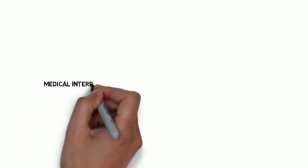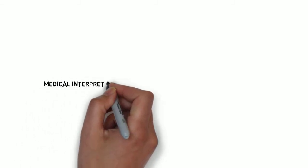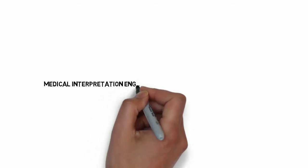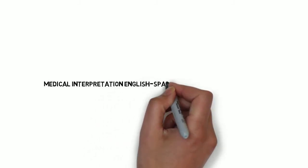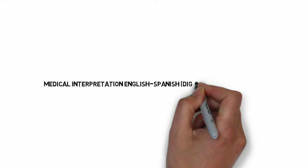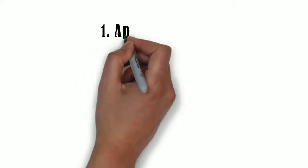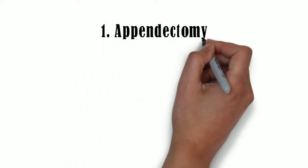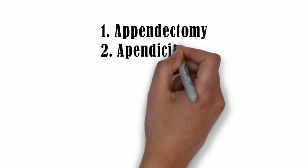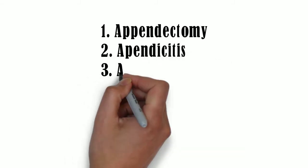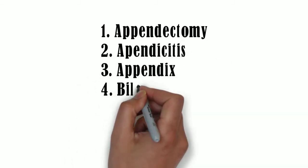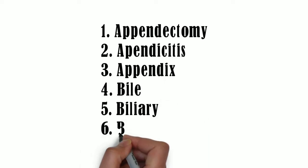Welcome to Medical Interpretation English-Spanish Digestive System Video 2. Today I will discuss six words related to the digestive system. I will provide their definition in English as well as in Spanish. The six words are: appendectomy, appendicitis, appendix, bile, biliary, bilirubin.